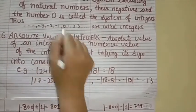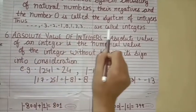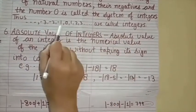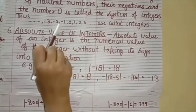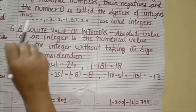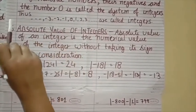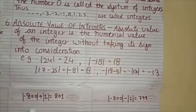So ये सारे integers होते हैं, जिनमें center में 0, फिर 1, 2, 3 सारे positive natural numbers, and minus 1, minus 2, minus 3 ये negative numbers — ये सब होंगे integers.